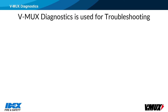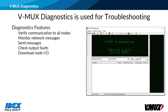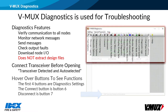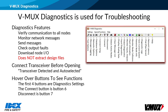The VMux Diagnostics program is used for system troubleshooting. With it, you can verify communication to all nodes, monitor network messages, send messages, check for output faults, and download input and output information from the node. You cannot extract a binary file from the node to install it into a new node — in that situation you would need to get the node design file from the truck builder. Make sure the transceiver is plugged in before opening the diagnostics program. It should show transceiver detected and auto selected at the bottom of the window. Text explaining a button's function will appear when you hover over it.